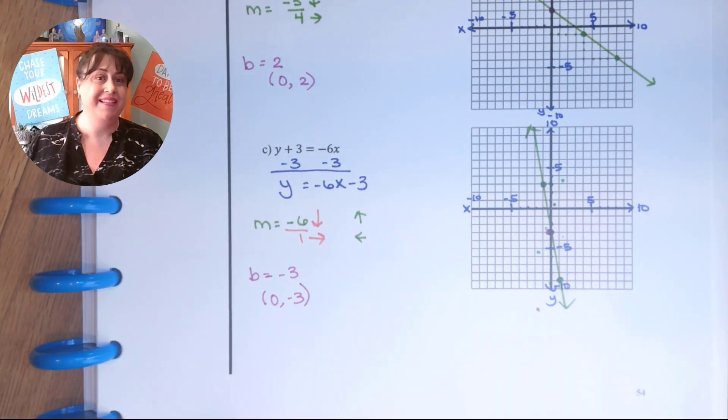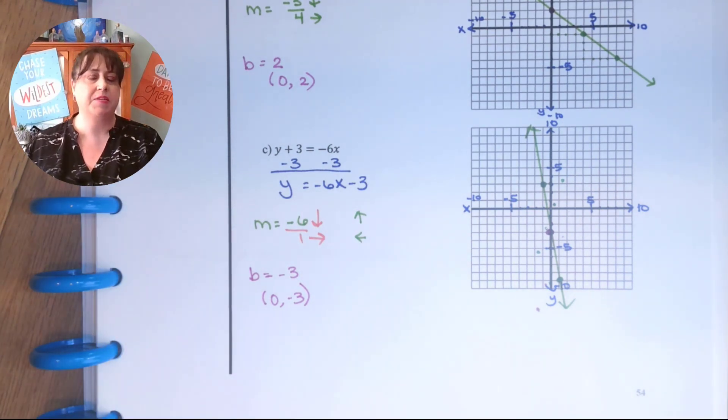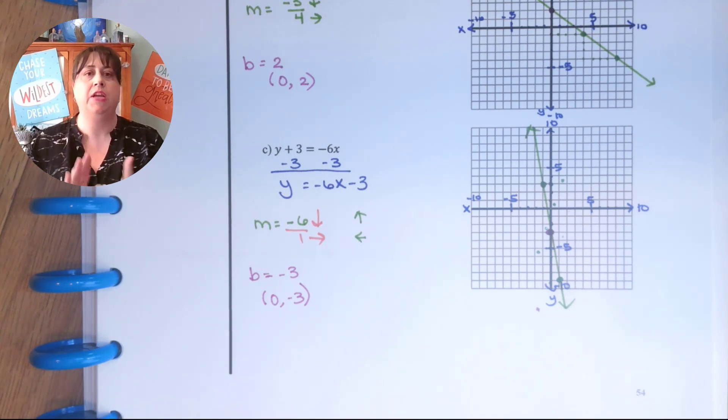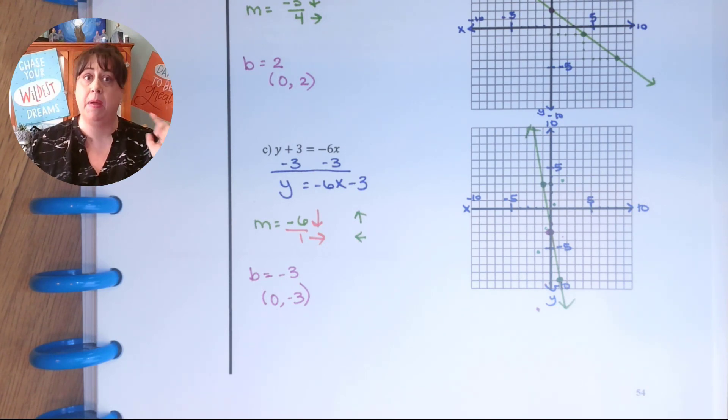Okay. So that right there, that is graphing equations with slope intercept form. Y equals mx plus b. What I would like you to do tonight is I would like you to write y equals mx plus b at least 5 times so that you can start memorizing it. You have to have that thing memorized.